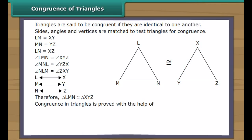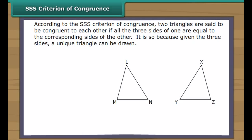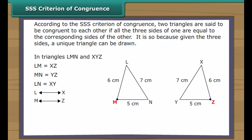Congruence in triangles is proved with the help of the SSS, SAS, ASA, and RHS criteria. SSS criterion of congruence: according to the SSS criterion, two triangles are said to be congruent to each other if all three sides of one are equal to the corresponding sides of the other. This is because given three sides, a unique triangle can be drawn. In triangles LMN and XYZ: side LM equals side XZ, side MN equals side YZ, side LN equals side XY. Vertex L corresponds to X, vertex M to Z, vertex N to Y. Therefore, triangle LMN is congruent to triangle XZY.